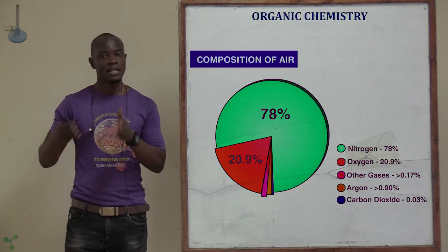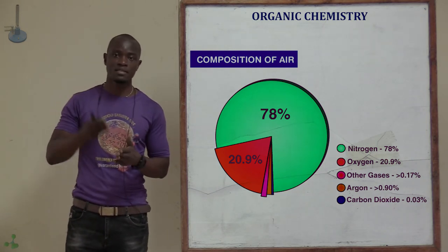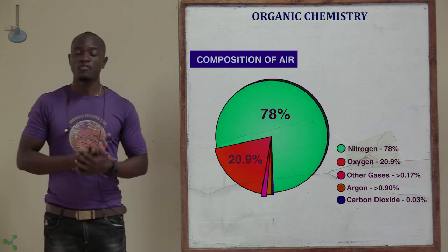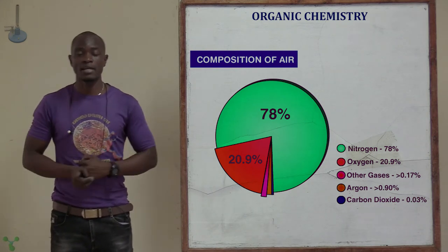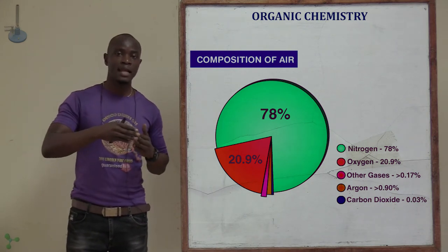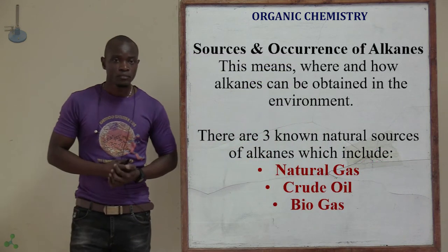Air has different components, including other gases, and these alkane gases also fall in the 'other gases' category, whereby methane occupies a larger portion.